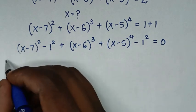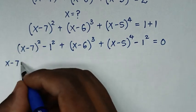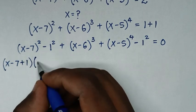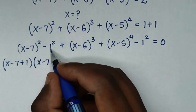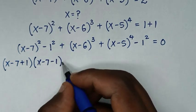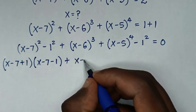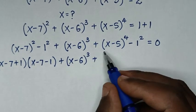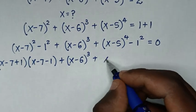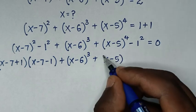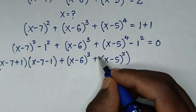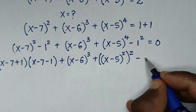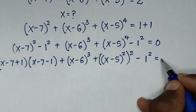So applying the difference of two squares, (x minus 7) squared minus 1 squared becomes (x minus 7 plus 1)(x minus 7 minus 1), plus (x minus 6) cubed. Then (x minus 5) to the power 4 minus 1 squared is written as (x minus 5) squared all squared, minus 1 squared, equals 0.